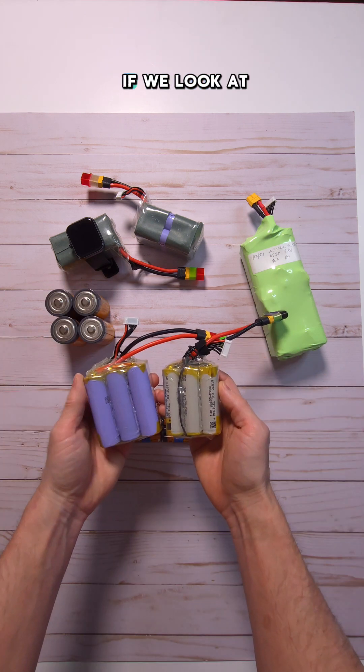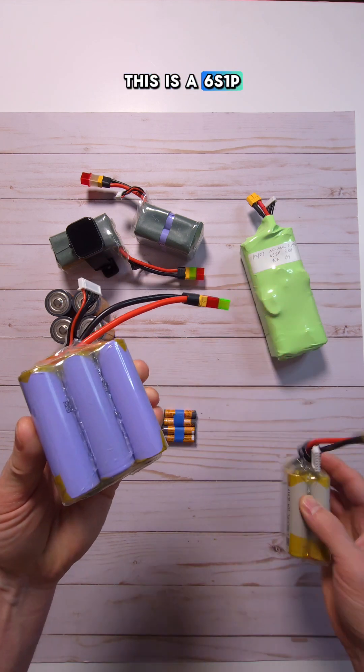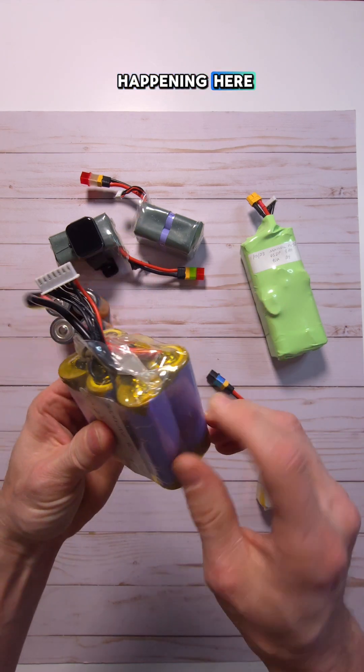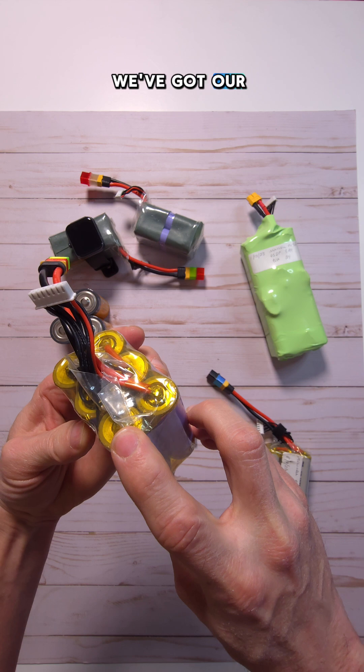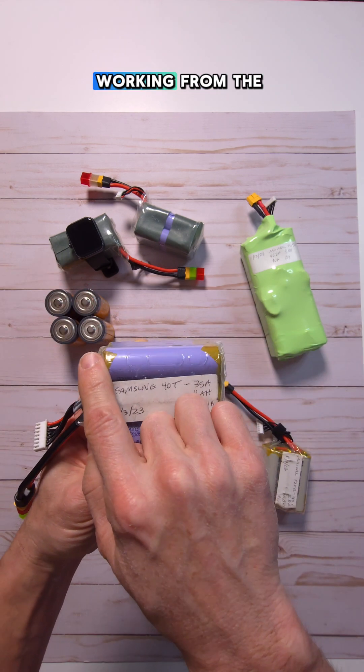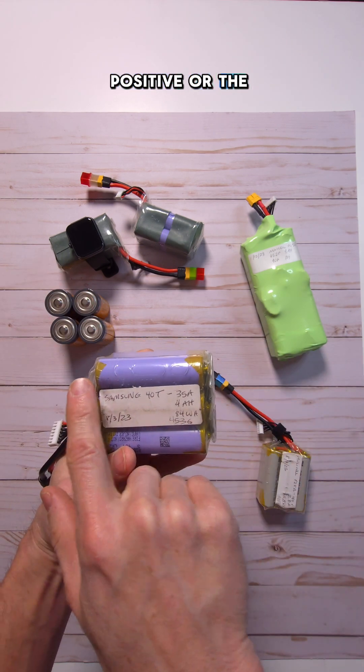Now, if we look at these bad boys right here, this is a 6S1P. And because of the clear plastic, we can see what's happening here. So we've got our positive side, we've got our negative side. You always want to think about working from the negative towards the positive or the bottom up.